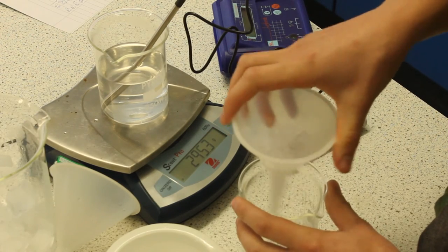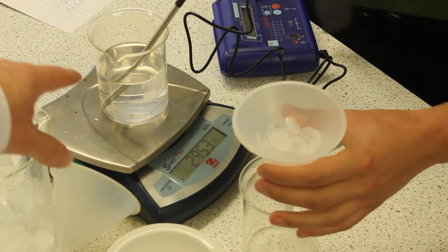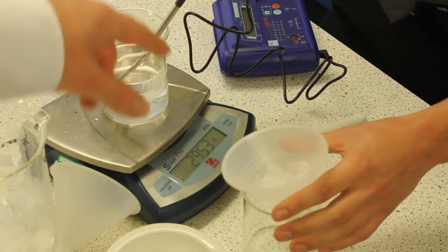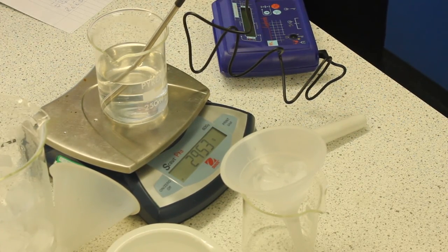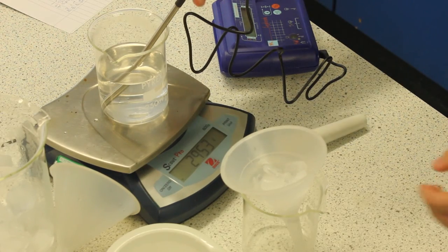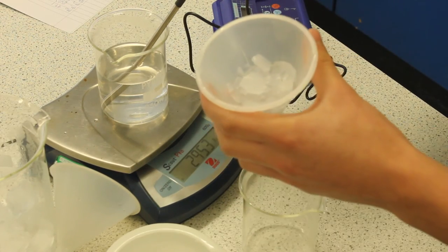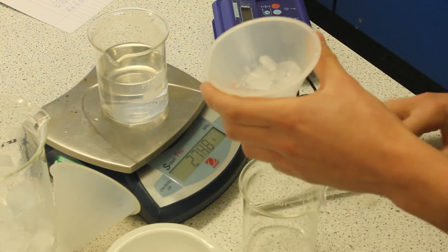There we go. So we have our beaker there with the water, which is at what temperature? That's 33.2, so about sort of above room temperature somewhere. And we're going to drop in that ice. It doesn't need to be an exact amount of ice because it's all just going to be calculated out.